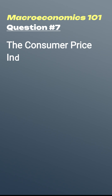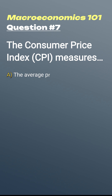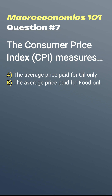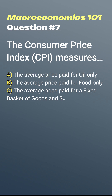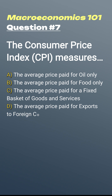Question number seven. The Consumer Price Index, CPI, measures: A, the average price paid for oil only; B, the average price paid for food only; C, the average price paid for a fixed basket of goods and services; D, the average price paid for exports to foreign countries.